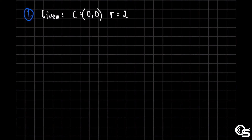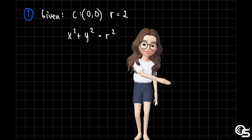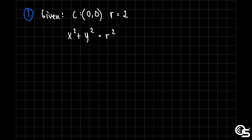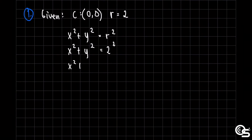We know that the standard form of the equation we will use in this example is x squared plus y squared is equal to r squared, because this is the standard form for a center at the origin. We will substitute 2 for r, so we have x squared plus y squared is equal to 2 squared. Simplifying, that would be x squared plus y squared is equal to 4, and that is already the standard form.